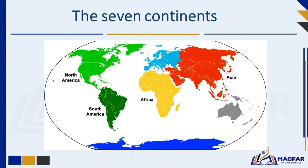South America is famous for the Amazon Rainforest and the Andes Mountains. Countries like Brazil, Argentina, and Peru call this continent home. Antarctica is the icy wonderland at the bottom of the Earth — penguins, seals, and lots of ice characterize this continent.